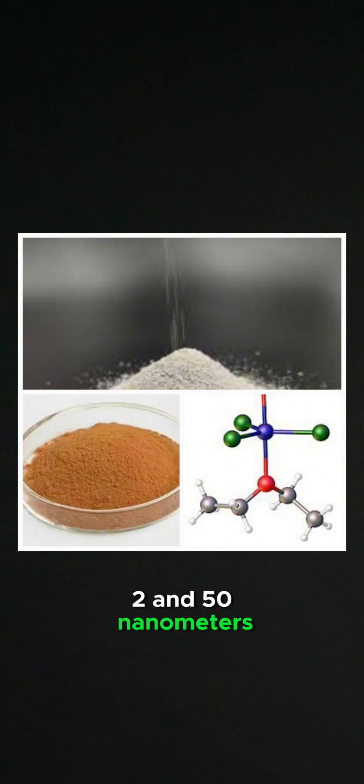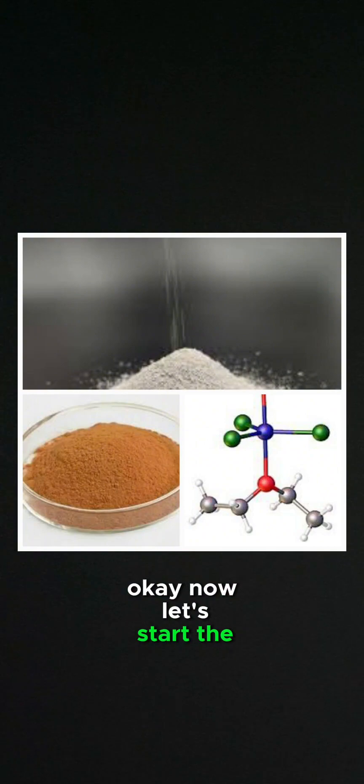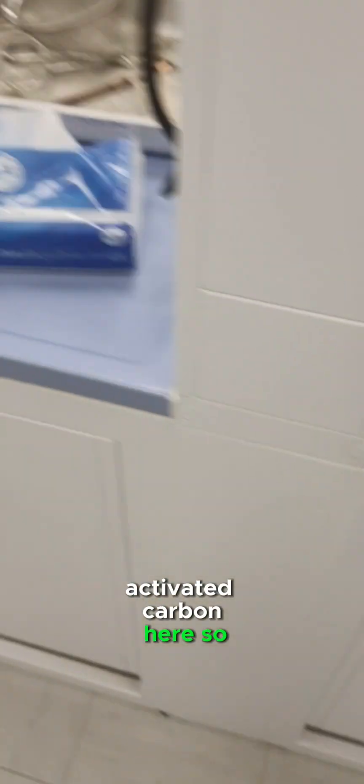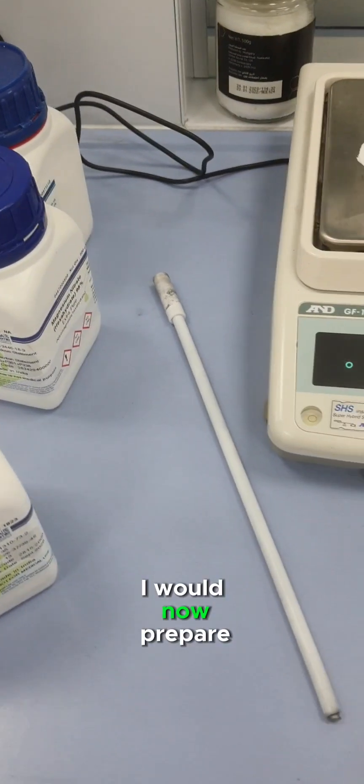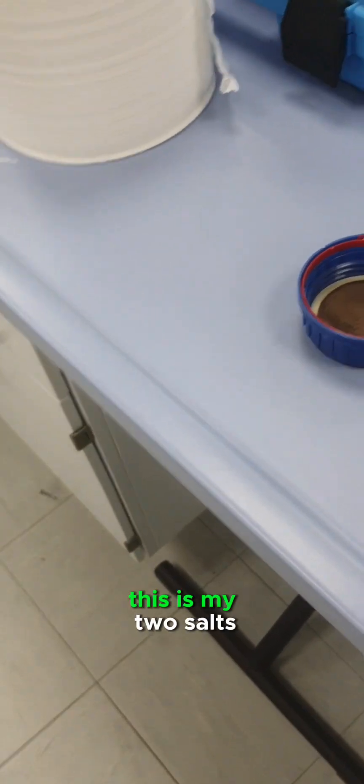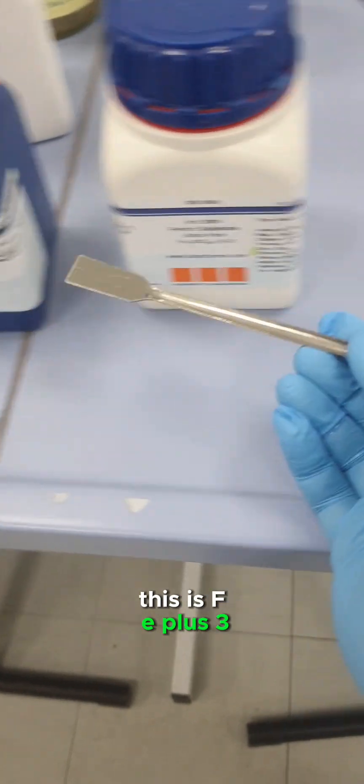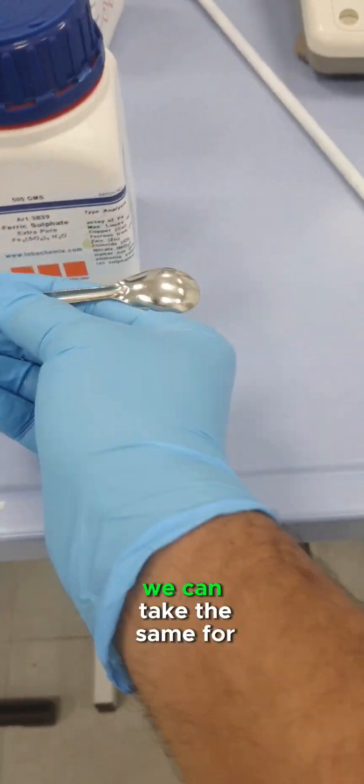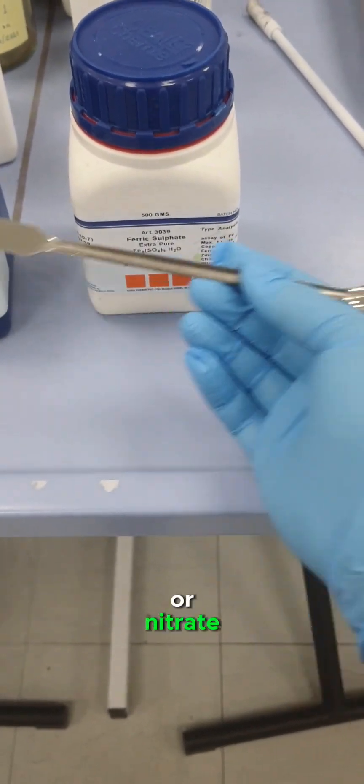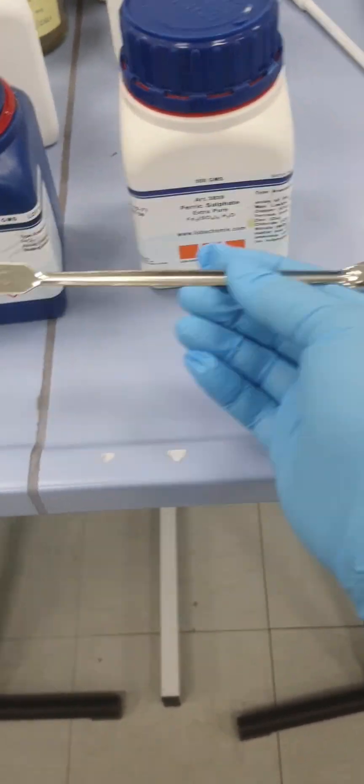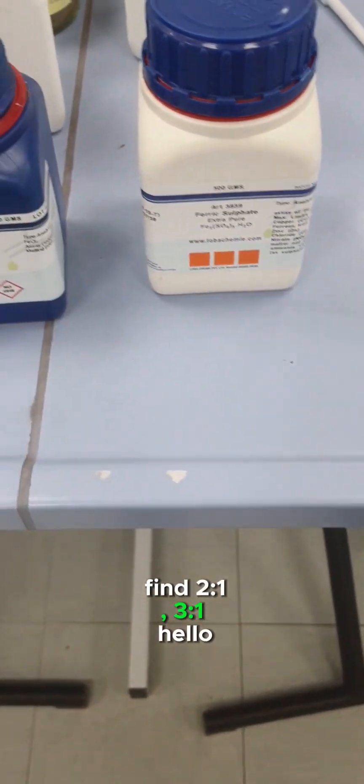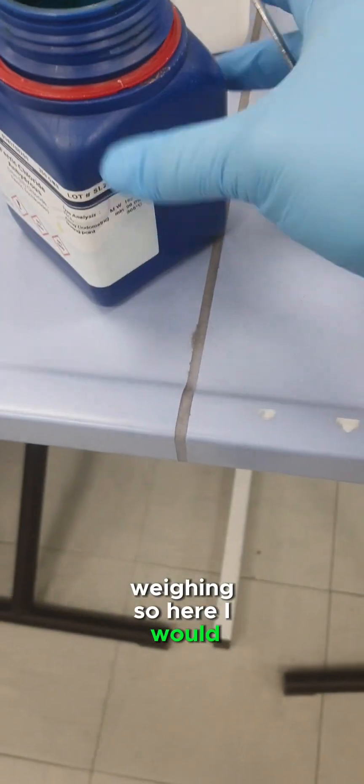Now let's start the process. After ultrasonication of my activated carbon, I will now prepare my salts. You can see here this is my two salts: Fe3+ and Fe2+. We can take ferric chloride and iron sulfate, or both as ferric chloride, or iron nitrate. I'm taking here two different salts and the molar ratio is 1:1. In literature you can find 2:1 or 3:1. Let's start with the weighing.